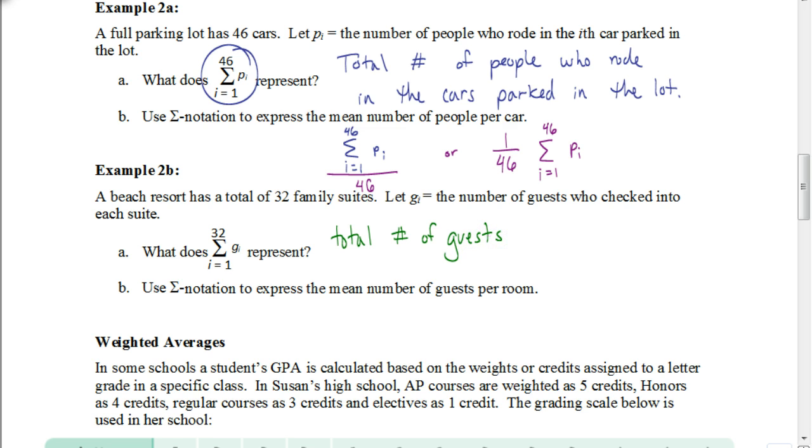And we're going to use summation notation to express the mean number of guests per room. So again, we're just going to start by rewriting this. And then to find the mean, we're going to divide by how many there are. So we're going to divide by how many rooms, how many numbers there are in the set. That's 32 numbers. We're going to divide by 32. Or you could have written it like this. 1 over 32 times the sum going from the first to the 32nd term. So either one of those would have been correct.